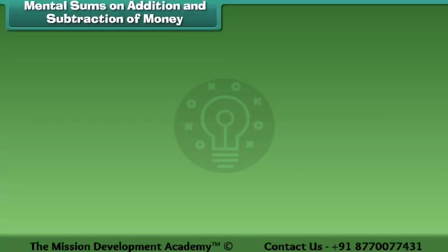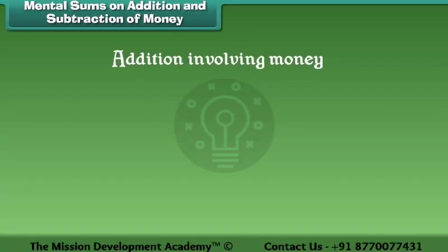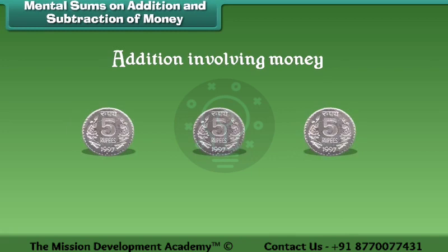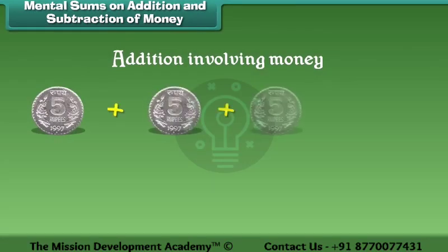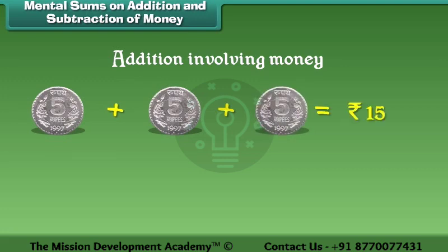Now let us learn about addition involving money. If I have 3 five-rupee coins, then can you tell me the total rupees? Add 5 plus 5 plus 5, which is equal to 15 rupees.